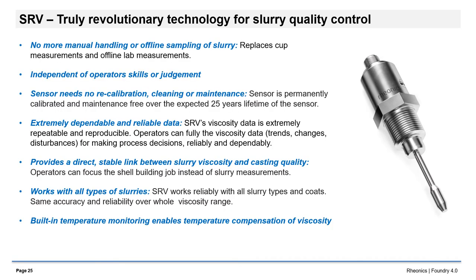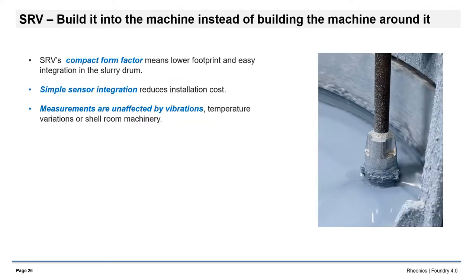To recap the advantages of inline, immediate viscosity measurement: it replaces offline measurements using cups and rotational viscometers. It is independent of operator skill, maintenance-free, provides robust measurements and is reliable. SRV integrates seamlessly into existing slurry drums and shell room environments. There is no need to redesign equipment to accommodate inline viscosity measurement.